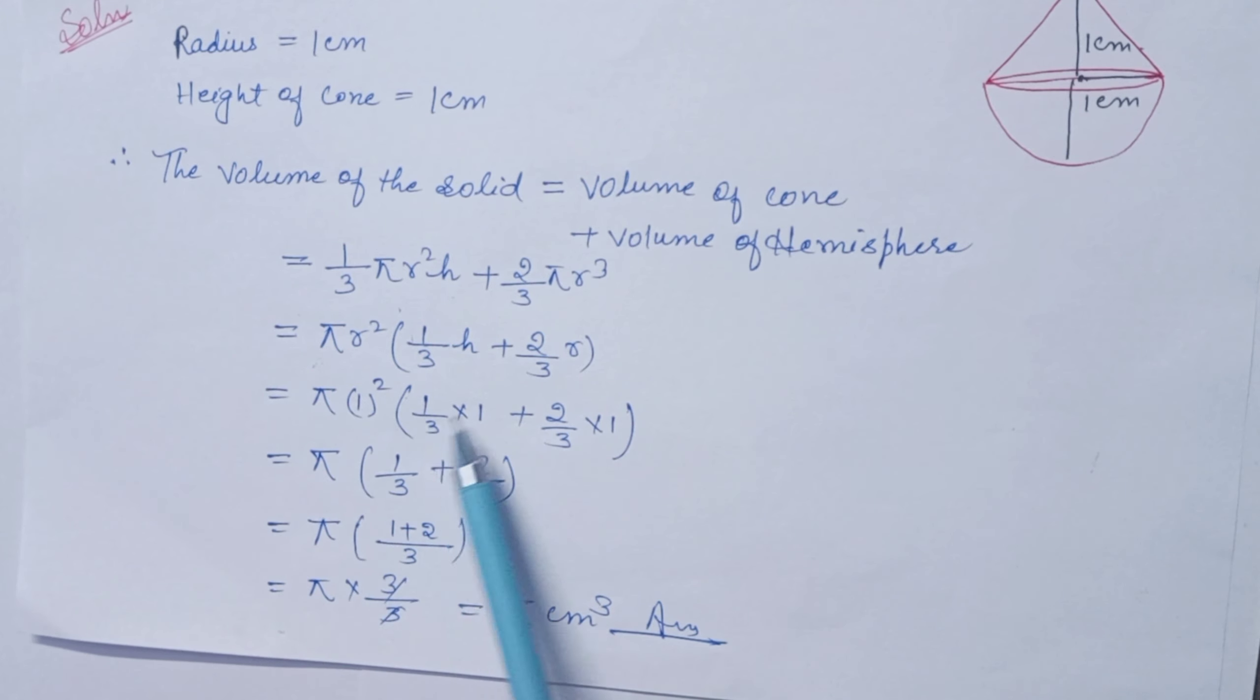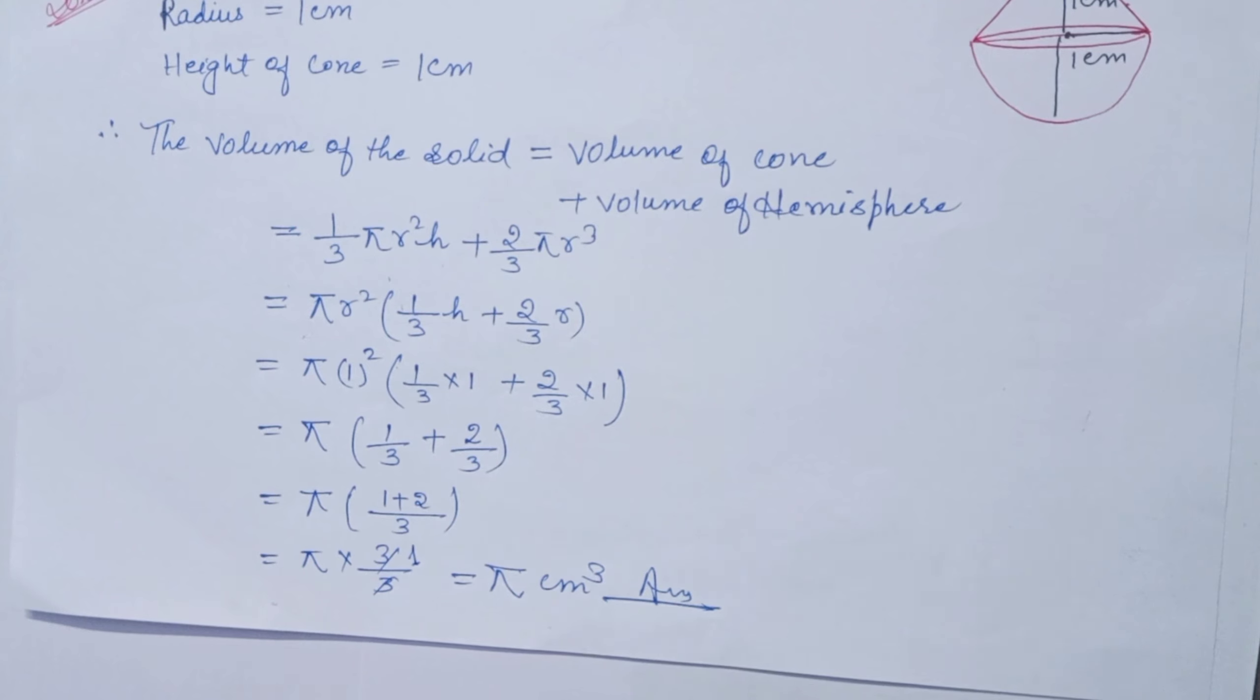Pi equals pi times 1 times 1/3 plus 2/3. Now, π into bracket - let's solve. The common denominator is 3, so 1 plus 2 add up. Then π into (1 plus 2)/3. 3 divided by 3. Pi times 1 is pi. Then we will get π cm³.